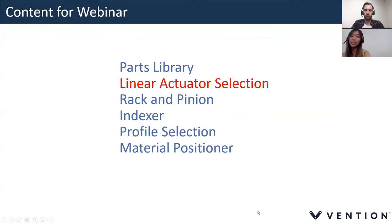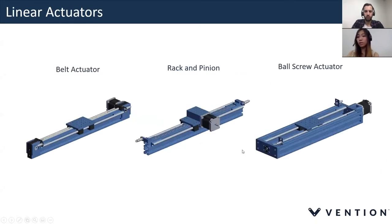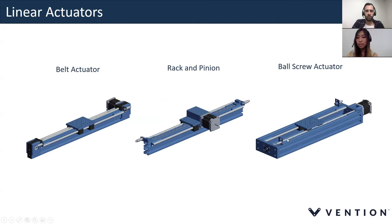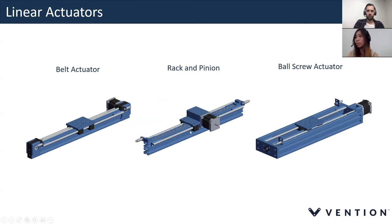Let's jump into the linear actuator selector. We have three different types of linear actuators available: the belt actuator, the rack and pinion, and the ball screw actuator. It can sometimes be overwhelming to choose the right linear actuator to optimize cost, repeatability, speeds, and load capacities for your application. We're mainly going to be focusing on the rack and pinion today.